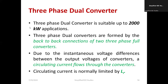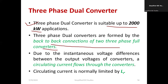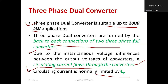First, I would like to explain why we require a 3-phase dual converter. The 3-phase dual converter is mainly suitable where the power requirement is up to 2000 kW. It is nothing but the back-to-back connection of two 3-phase full converters. When these two converters are connected back-to-back, there is a circulating current flow between them, because there is an instantaneous voltage difference between the two output voltages. The output voltage of one converter is out of phase with respect to the output voltage of the other converter, causing circulating current. In order to limit the circulating current, we use an inductor called L_LAP.